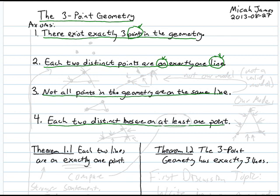So the three-point geometry has these four axioms, and the question is: what does it look like? If we just go by axiom 1, we know there are three points. Incorporating axiom 2 — which says each two distinct points are on exactly one line — we could have a triangle arrangement: a line containing these two points, another line containing these two points, and a third line containing these two points.